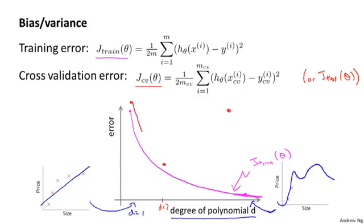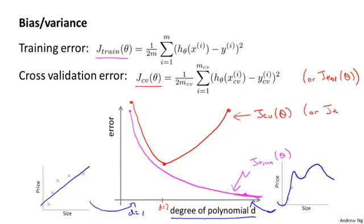If you vary this smoothly and plot a curve, you might end up with a curve for J_cv(θ) that dips down in the middle. And if you plot J_test(θ), you get something very similar. This sort of plot helps us better understand the notions of bias and variance.